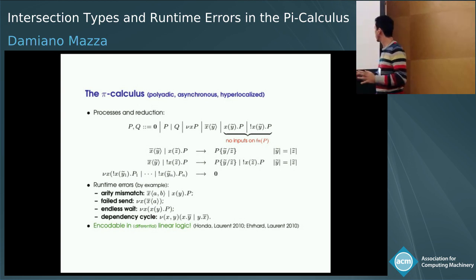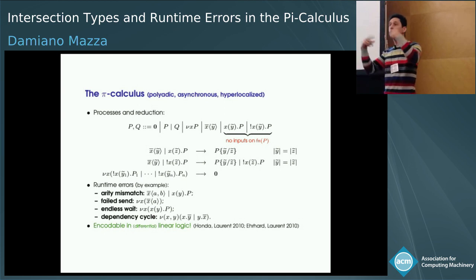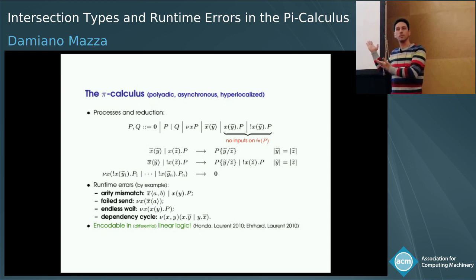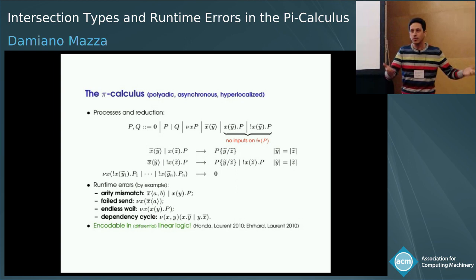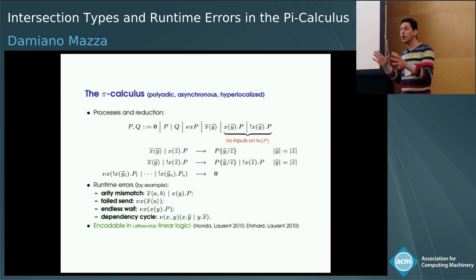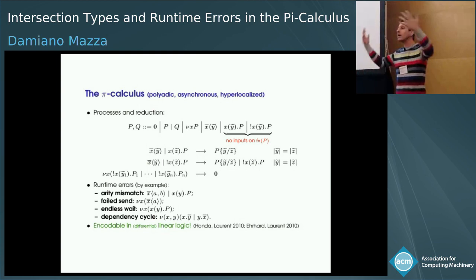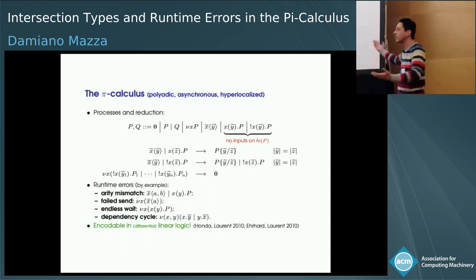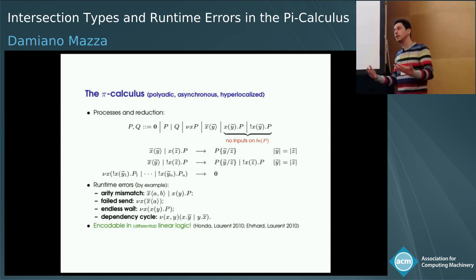By virtue of what I told you in the previous slide, there is an intersection type system for this thing. The important thing I would really like you to understand is that we did not invent this type system. The type system I'm about to present — we didn't invent it. It was sort of given to us, because just by the very existence of this encoding you have this type system. What we had to do still involved non-trivial work.